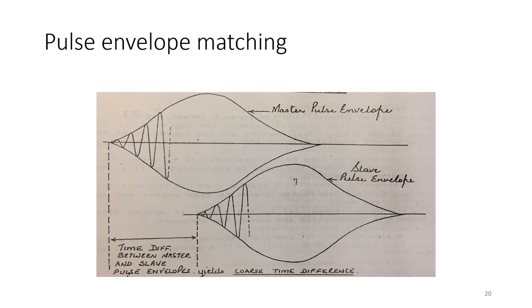In the automatic pulse envelope matching technique, the pulse envelope of the master signal is fed through a variable delay circuit before being compared with the pulse envelope of the slave station. If the two are not perfectly matched, an error voltage is generated; the variable delay circuit then adjusts the delay of the master signal until the two pulses are matched and there is no residual error voltage. The amount by which the master pulse has been delayed is the coarse time difference in microseconds.